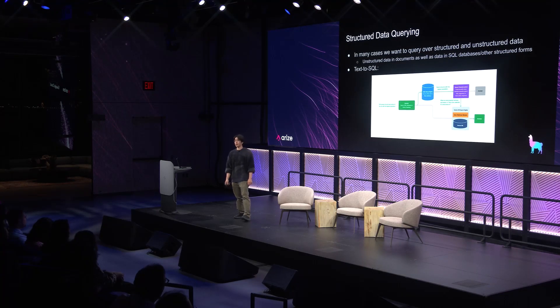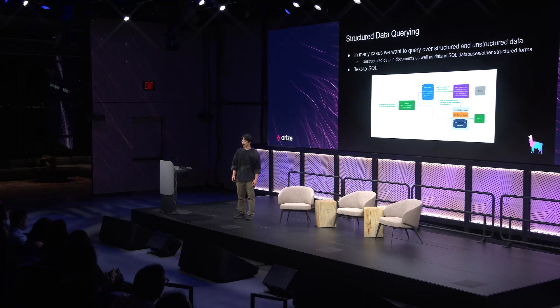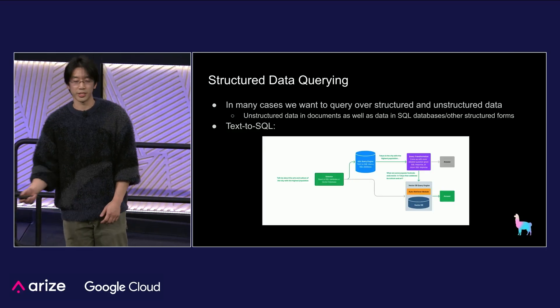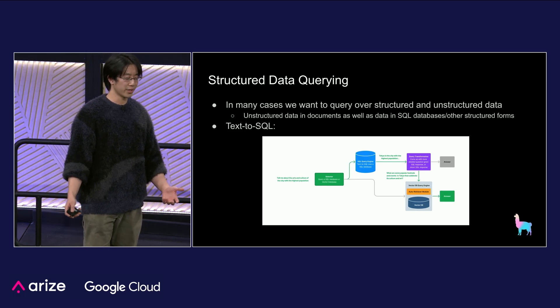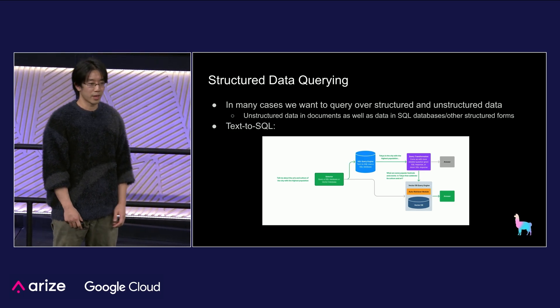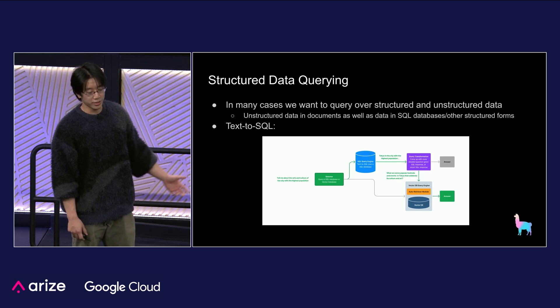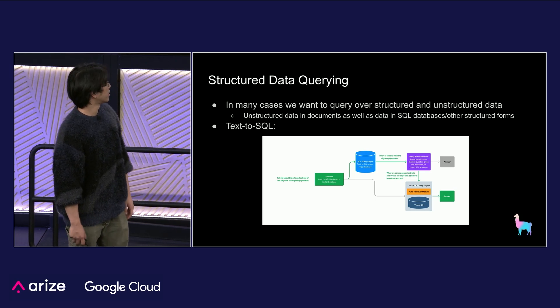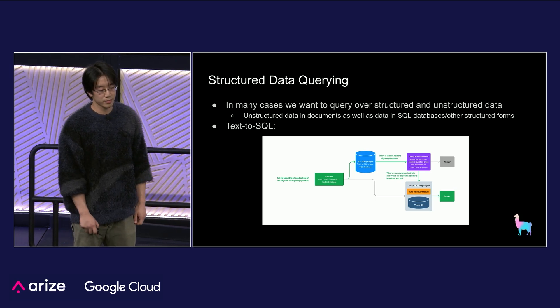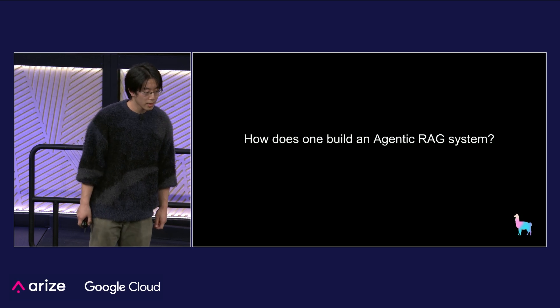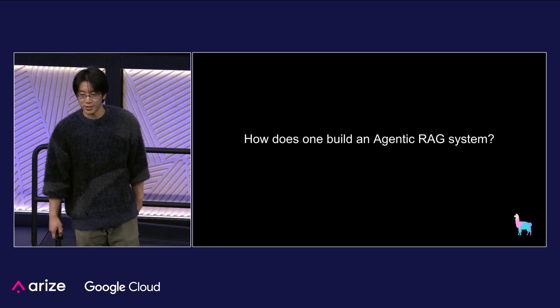Another very common technique is structured data querying. Naive RAG typically involves vectorizing unstructured documents and storing them in a database — but what if your data lives in SQL databases, CSVs, or XMLs? You need a way to grab that data too. Text-to-SQL is a common, specific implementation of this technique.